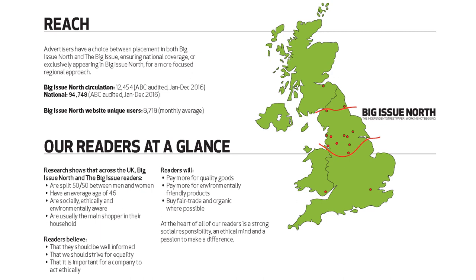We need to consider who the audience for the Big Issue is. It's 50/50 men and women, average age of 46 — an older, middle-aged audience. They are socially, ethically, and environmentally aware, well informed, strive for quality, and want companies to act ethically. They're willing to pay more for quality goods, environmentally friendly products, and buy fair trade and organic where possible. At the heart of all readers is a strong social responsibility, ethical mindset, and a passion to make a difference.